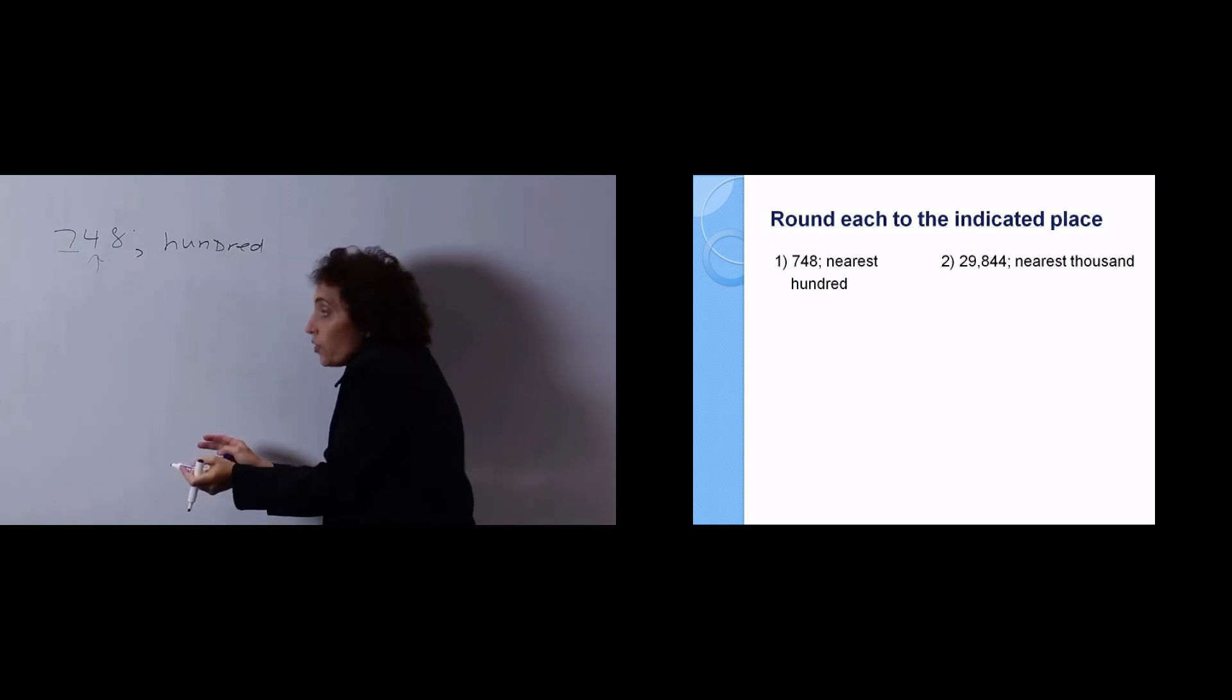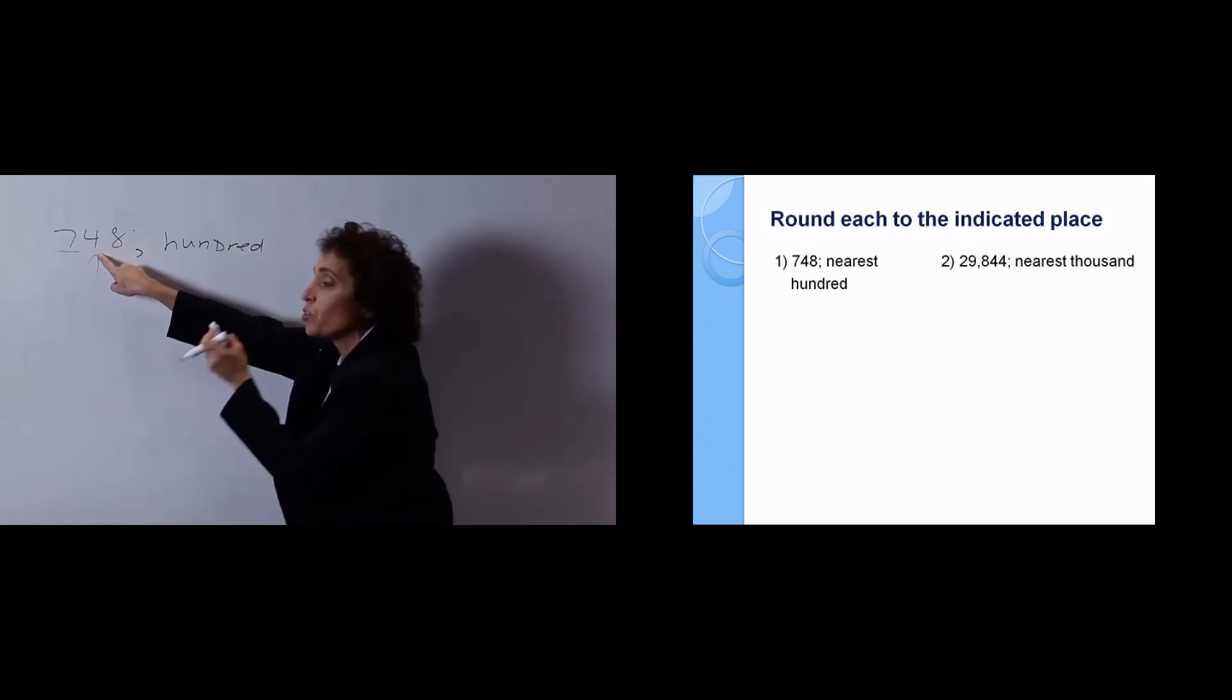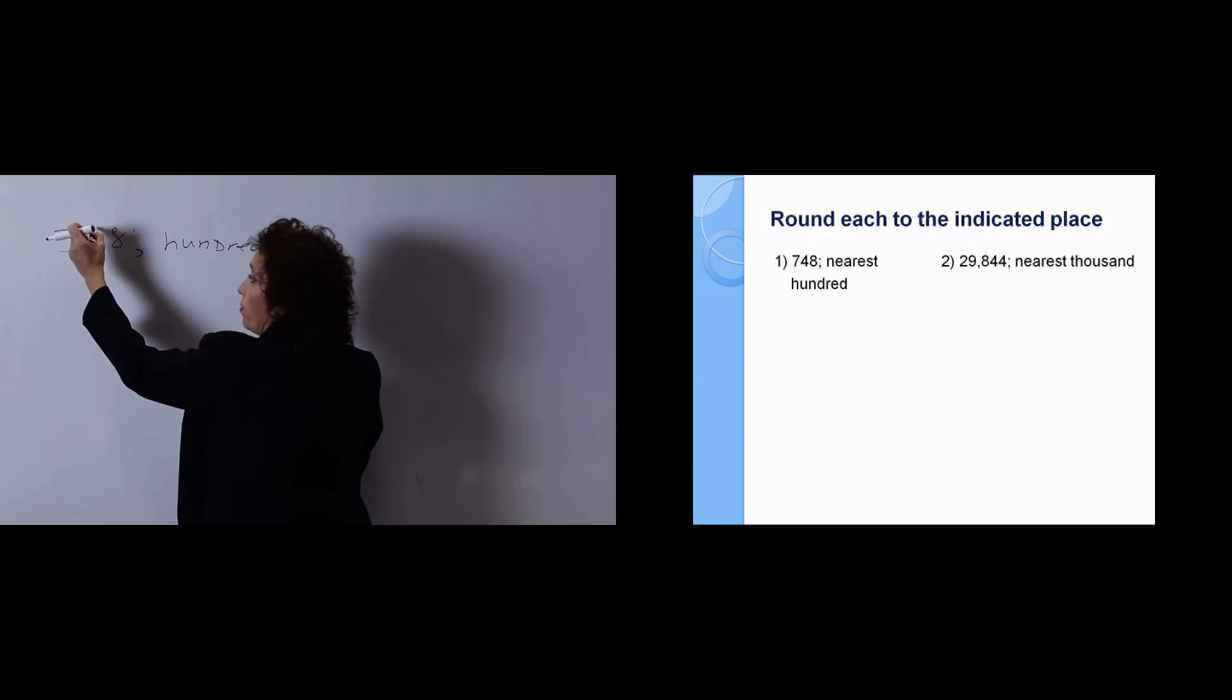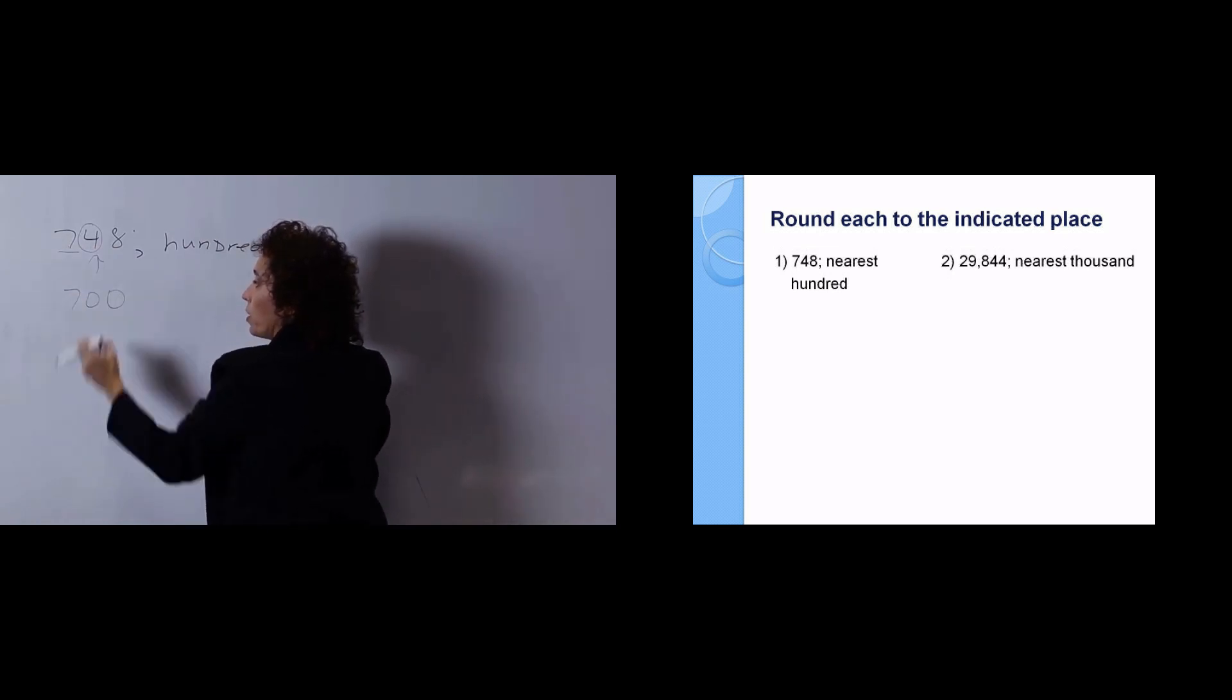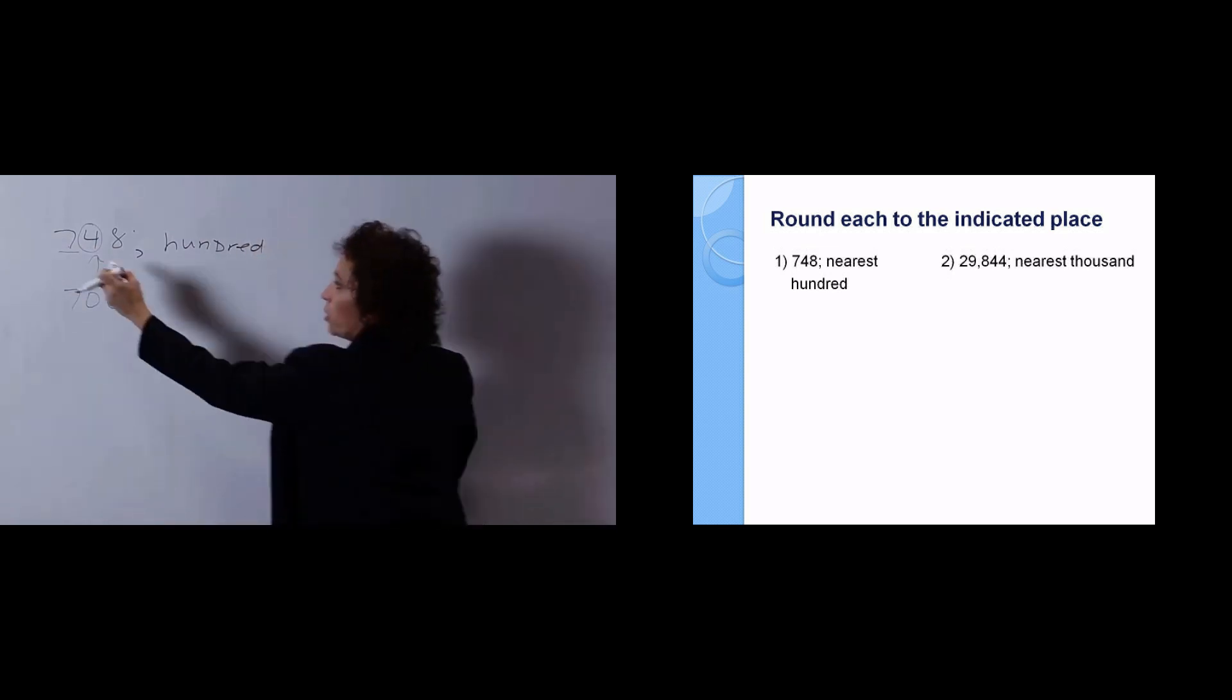Don't look at the 8. The 8 has nothing to do with this in rounding. You just go to the number to its immediate right. I look at the 4, and since that's not a 5 or higher, that 4 tells me to leave the 7 alone. So it becomes 700 because you make the rest zeros.